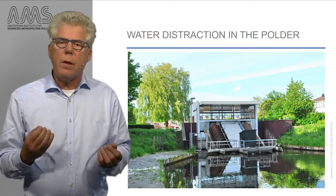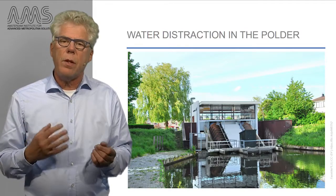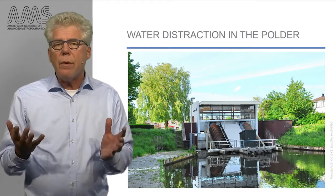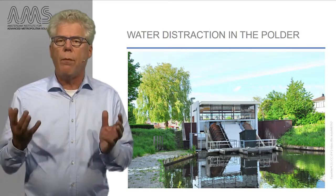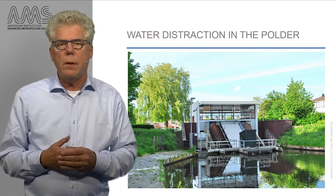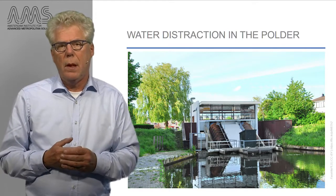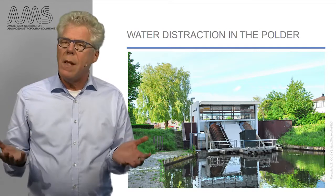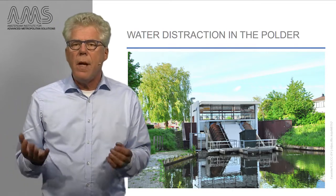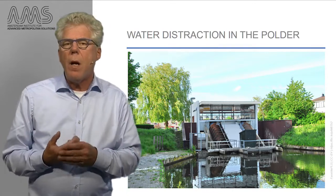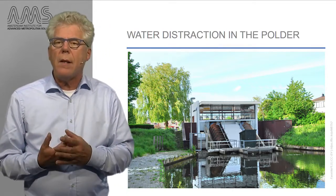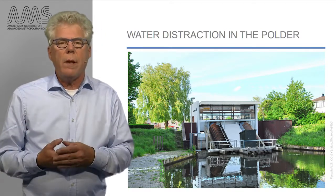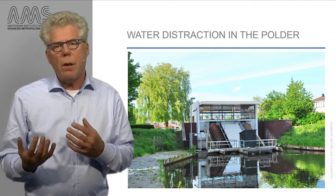The same holds for other delta areas, such as the polders in the Netherlands, where the soil surface level dropped 4 meters in 4 centuries. Another example are the industrial areas around Ho Chi Minh City in Vietnam, located in the Mekong and Dong Nai Delta. In many of these locations, groundwater extraction needs to be stopped.